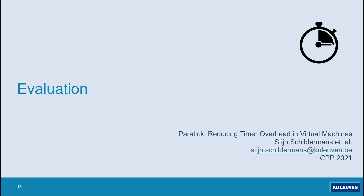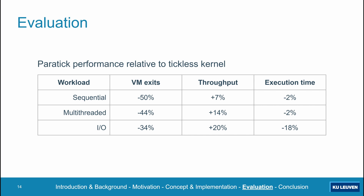We evaluated Paratick relative to a regular tickless Linux kernel hosted on a KVM hypervisor for a variety of workloads. Specifically, we evaluated VM exits, system throughput, and application execution time for sequential, multi-threaded, and IO-heavy workloads. Paratick drastically reduces VM exits for all of these. For sequential workloads, system throughput and application execution time are only modestly improved, likely because virtualization overhead is already very low for such workloads, so even a large reduction only has a small impact on overall performance.